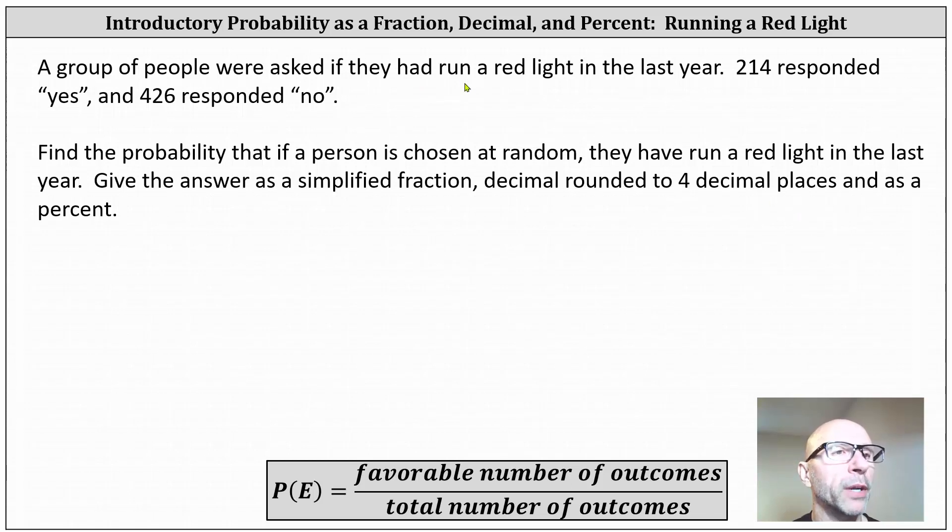A group of people were asked if they had run a red light in the last year. 214 responded yes, and 426 responded no. We're asked to find the probability that if a person is chosen at random, they have run a red light in the last year. Give the answer as a simplified fraction, a decimal rounded to four decimal places, and as a percent.